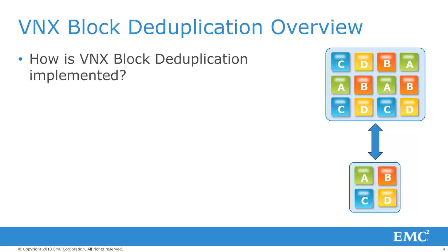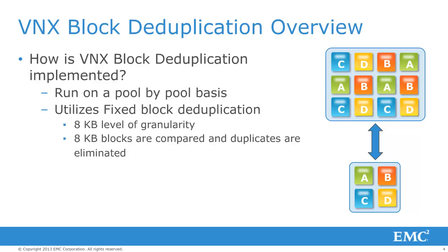VNX block deduplication is run on a pool by pool basis, with each pool having its own deduplication process. Deduplicated LUN data is not compared with data from other pools on the system. It utilizes fixed block deduplication with a granularity of 8KB. 8KB blocks are compared, a single instance of the data is saved, and any duplicates are removed.